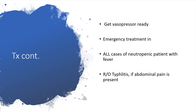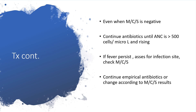Get vasopressors ready. All neutropenic patients with fever are treated as emergency cases. Rule out typhlitis if there is associated abdominal pain. Even when MCS lab results come back negative, we continue antibiotics until the absolute neutrophil count is greater than 500 cells per microliter and rising. If fever persists, reassess for infection site, recheck MCS, and continue empirical antibiotics or change according to MCS results.